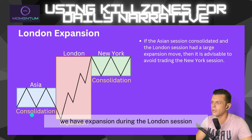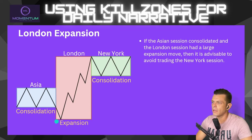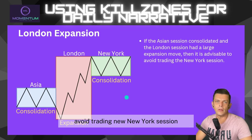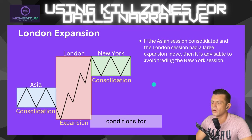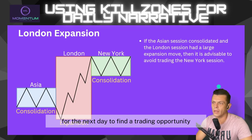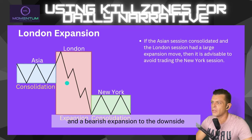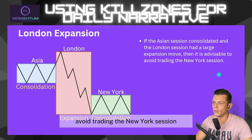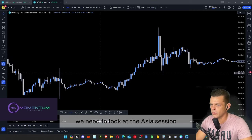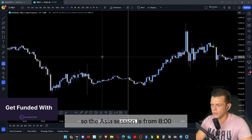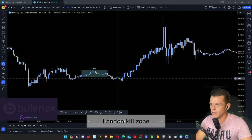The next profile is the London Expansion profile. If we observe consolidation or accumulation during the Asia session followed by expansion during the London session, we will avoid trading the New York session — price action will typically be very choppy and difficult to trade. I'll normally wait for the next day to find a trading opportunity. This applies whether the London expansion is bullish or bearish.